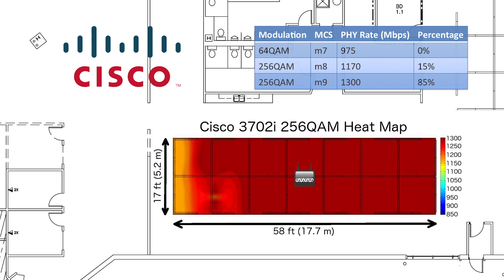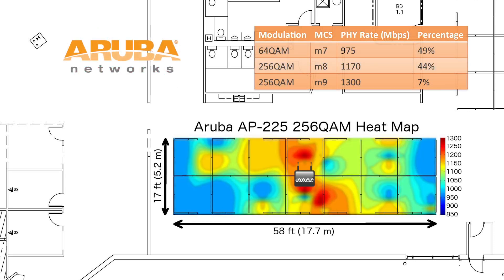This is what we found out. The AP3700 does a very good job of supporting 256QAM over our meaningful area. 85% of the time, the AP3700 transmitted at M9 and the remaining 15% at M8. If we compare that to the Aruba AP225, things look different. The AP225 only managed to transmit at M9 7% of the time, and probably more importantly, the AP225 spent almost 50% of the time transmitting at M7, which is only 64QAM.